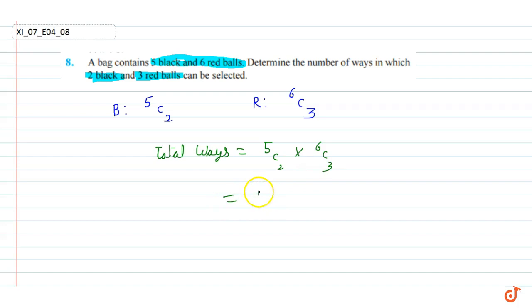5C2 is 10, and 6C3 is 6 × 5 × 4 ÷ 3!. 3! is equal to 6.